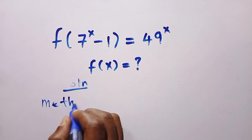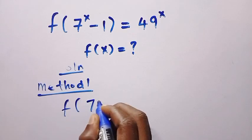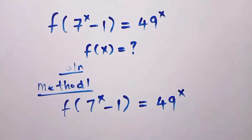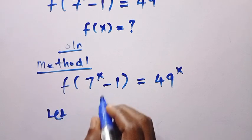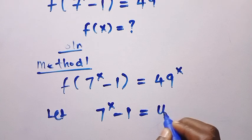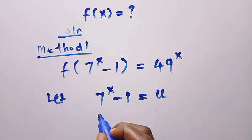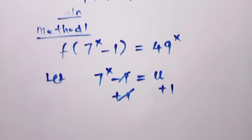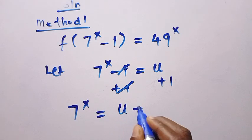For Method 1, we are given f of 7 to the power of x minus 1 equals 49 to the power of x. First, I let the domain — that is 7 to the power x minus 1 — equal u. Then I add 1 to both sides, so plus 1 and minus 1 cancel, giving us 7 to the power of x equals u plus 1.